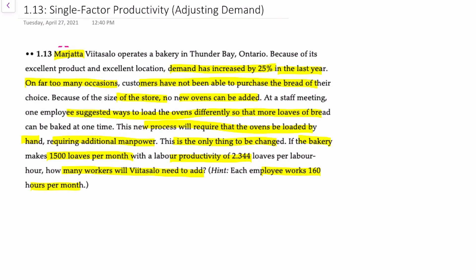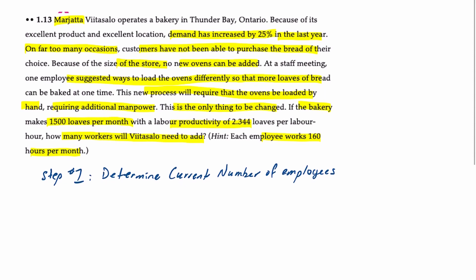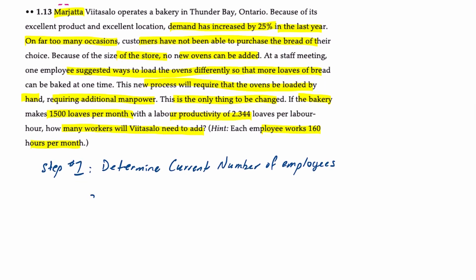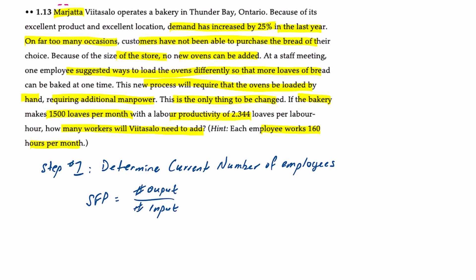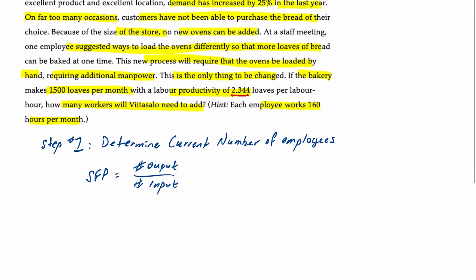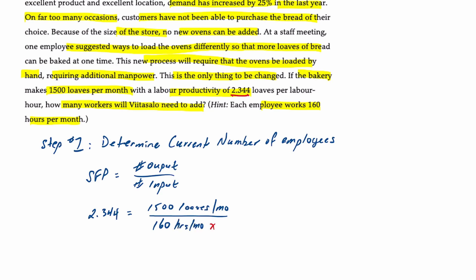The first thing to do is determine how many employees there are loading bread into the oven. From a previous video we know that single factor productivity equals the number of outputs divided by the number of inputs. In this question our labor productivity is 2.344 loaves per labor hour, which equals 1500 loaves per month divided by 160 hours per month times some number of employees, which we call x.